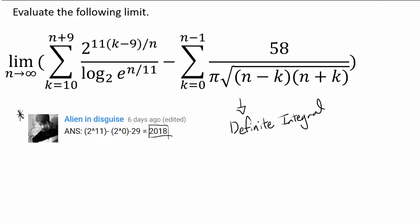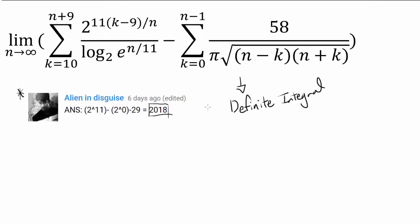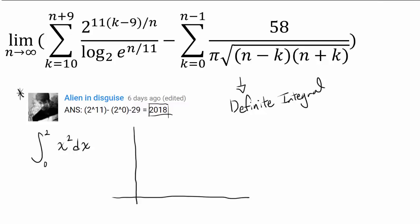For those not familiar with the limit definition of the definite integral, but who do know what a definite integral is, I'll share the definition quickly with an example. Let's say you wish to find the integral from 0 to 2 of x squared dx. You can anti-differentiate x squared and use the change from 0 to 2 to evaluate this integral.